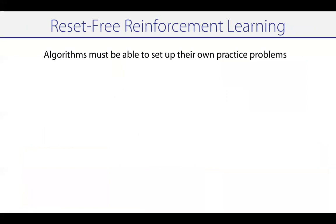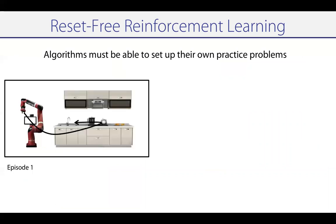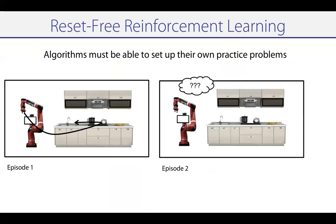If we want scalable reinforcement learning methods in the real world, we need to have them operate reset-free. They need to be able to set up their own practice problems. So let's say we had a robot operating in the kitchen trying to put the kettle into the sink as shown here. In the first episode, it tried to put the kettle in the sink and it is successful. Now in the second episode, we need the agent to be able to set up its own practice problem to try things over and over again.